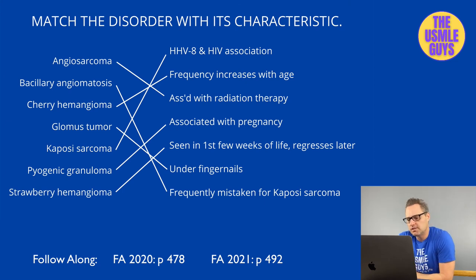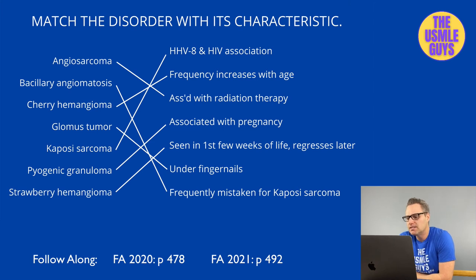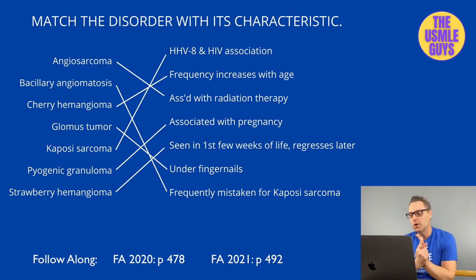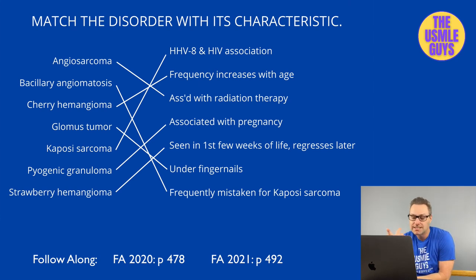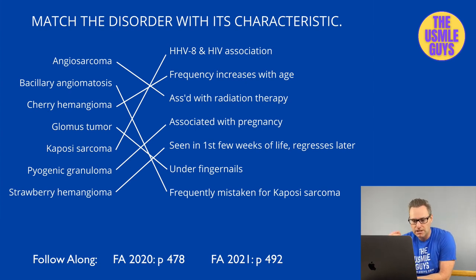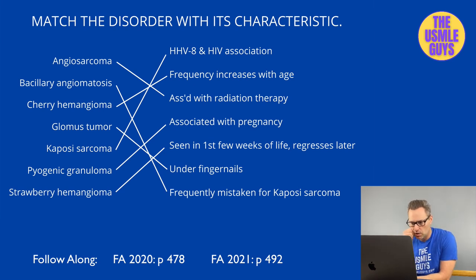Kaposi sarcoma is an endothelial malignancy affecting the skin, GI tract, mouth, and respiratory tract. It's associated with AIDS, organ transplant patients, and males of European descent. Beyond HIV, it's associated with HHV8. A key differentiator: Kaposi sarcoma shows lymphocytic infiltration, while bacillary angiomatosis shows neutrophilic infiltration.